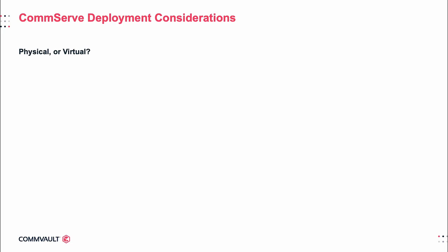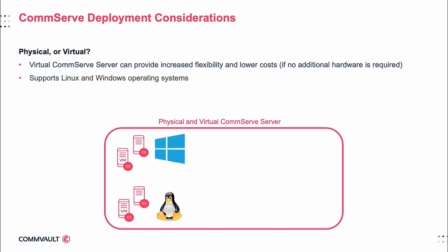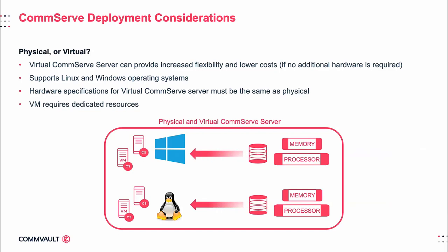A virtualized CommServe server can be a good option for many organizations, as it generally provides greater flexibility, higher availability, and reduced costs, since separate CommServe hardware is not required. CommServe servers installed on physical or virtual machines are supported by both Windows and Linux operating systems. Deployment on a virtual machine must meet the same hardware specifications as a physical server, such as CPU and RAM, with dedicated resources for the VM. If the virtual environment is not properly scaled, the CommServe server could become a bottleneck when conducting data protection jobs.